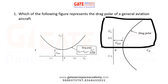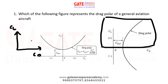Four options are given for this question. The right option shows CL on the vertical axis and CD on the horizontal axis, with a parabolic curve. That is the correct option for this question.